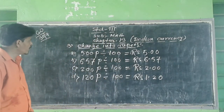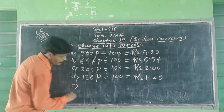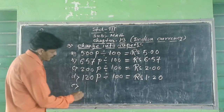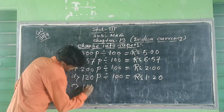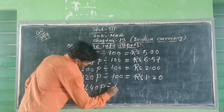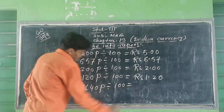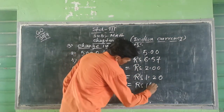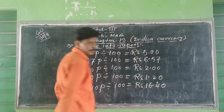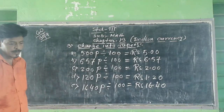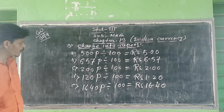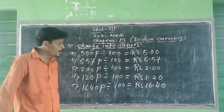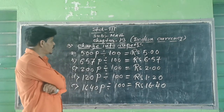Question Number 3e: 1645 paise. 1645 paise divide by 100 equal to Rupees 16.45.